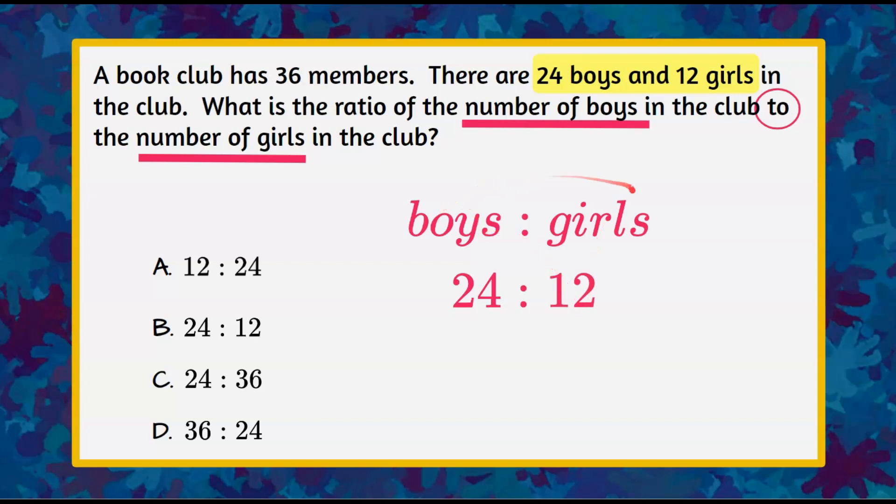And remember, order matters. If they said boys to girls, you have to have the number of boys to the number of girls. The reverse is not the same.